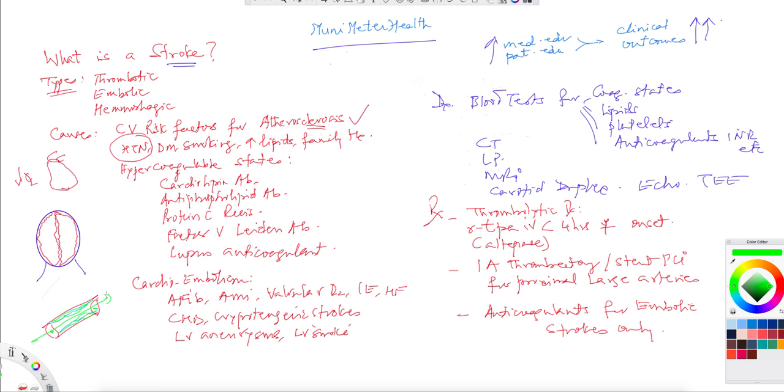Those become ischemic strokes. Ischemic strokes normally imply either they're thrombotic or embolic. Hemorrhagic strokes normally occur in a hypertensive setting where there's a small aneurysm within the brain that was there and got ruptured.